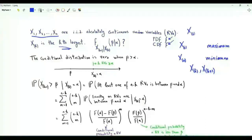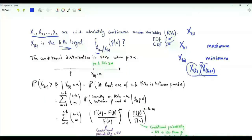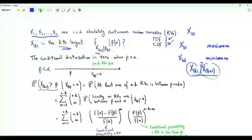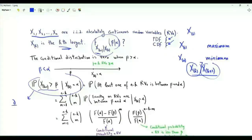The starting point is the conditional probability density function of Xk+1 given Xk. Specifically, the k-th largest random variable takes value alpha. We ask: what is the conditional PDF of Xk+1 as a function of beta? To find the conditional PDF, we take the conditional complementary CDF and differentiate it with respect to beta, then multiply by minus 1.